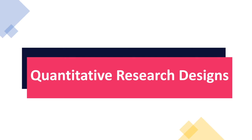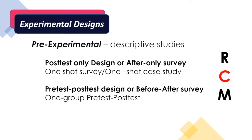Let's talk about quantitative research design. Experimental design involves an intervention or treatment given to a certain group or population — whether animals or human subjects. There are three major criteria in experimental research: R stands for randomization, C stands for control, and M stands for manipulation. To have a true experimental research, all three must be included.